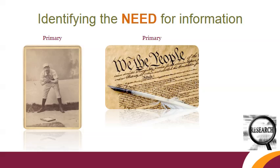Primary sources are historical records of a topic or an event taking place. Examples include photographs of an event, an account written by a person who witnessed an event, or historical newspaper or magazine articles. Original research, statistics, and data are also considered primary sources, as are government-created documents.